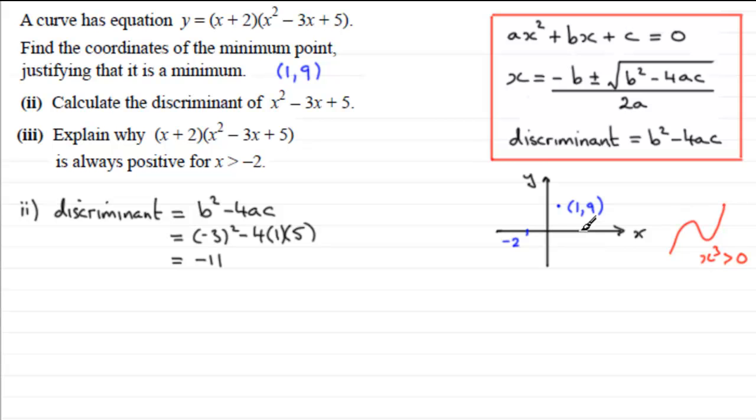What we've got is a graph that's coming up through here. It's going to cross the y-axis when x is 0. When x is 0, this bracket would be 2 and this one would be plus 5, so it's going to cross at 10. So we've got a graph coming up through the minus 2, up through the 10, curves around here, and then back up again. So it's always going to be positive for x greater than minus 2.